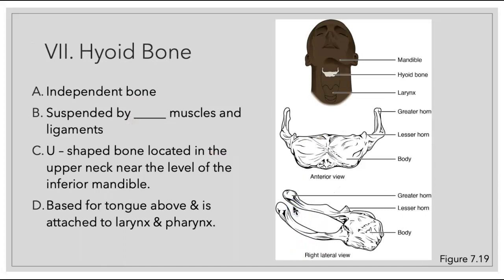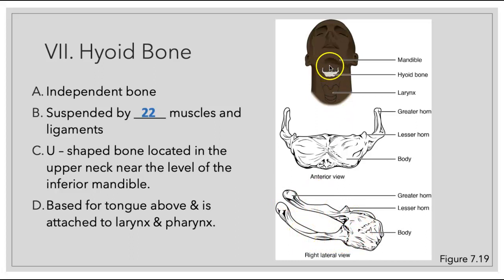Now let's talk about the hyoid bone. As we said, this is an independent bone — it doesn't attach to anything else and is suspended by 22 muscles and ligaments. Notice how it has a U shape resembling a horseshoe. It is located in the upper neck near the level of the inferior mandible and creates a base for our tongue above, attached to the larynx and pharynx with those muscles and ligaments.